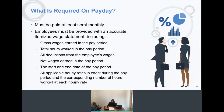The wage statement must also include the employee's name and only the last four digits of the employee's social security number or an employee identification number, and the full legal name and address of the employer. That means no abbreviations — if your business is All Business Company, it needs to say All Business Company, not ABC, even if you go by ABC publicly.